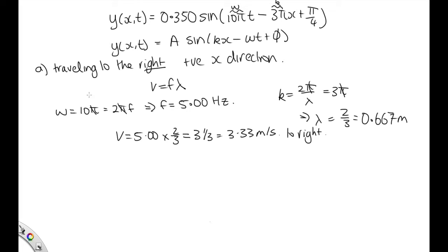Now part B asks us what's y at x equals 0.100 and t equals 0. So all we need to do is substitute these into our wave equation here. So this is equal to 0.350 sine. Now, 10πt, t is 0, so this term just disappears. So now we substitute in for our x, 0.100.